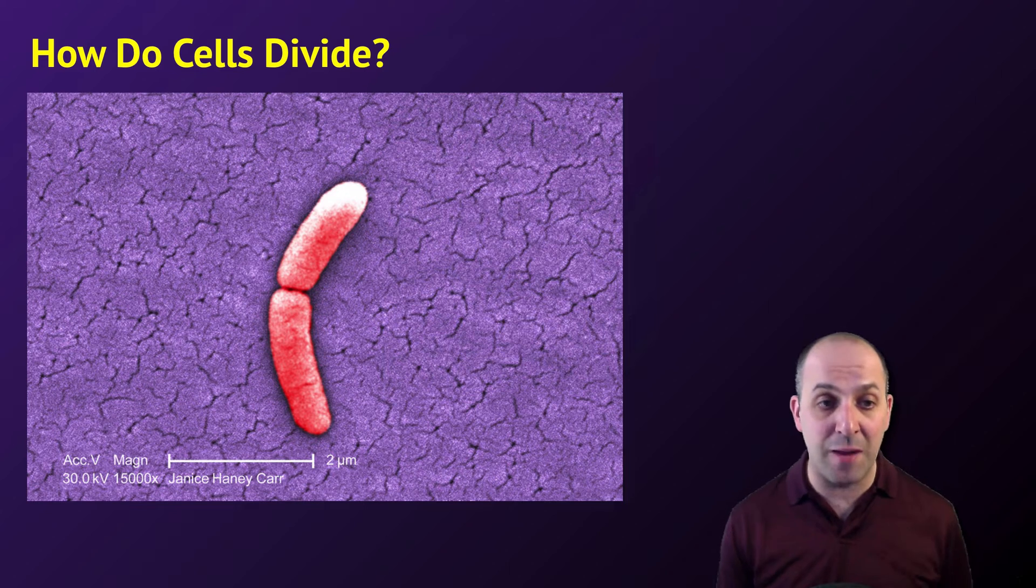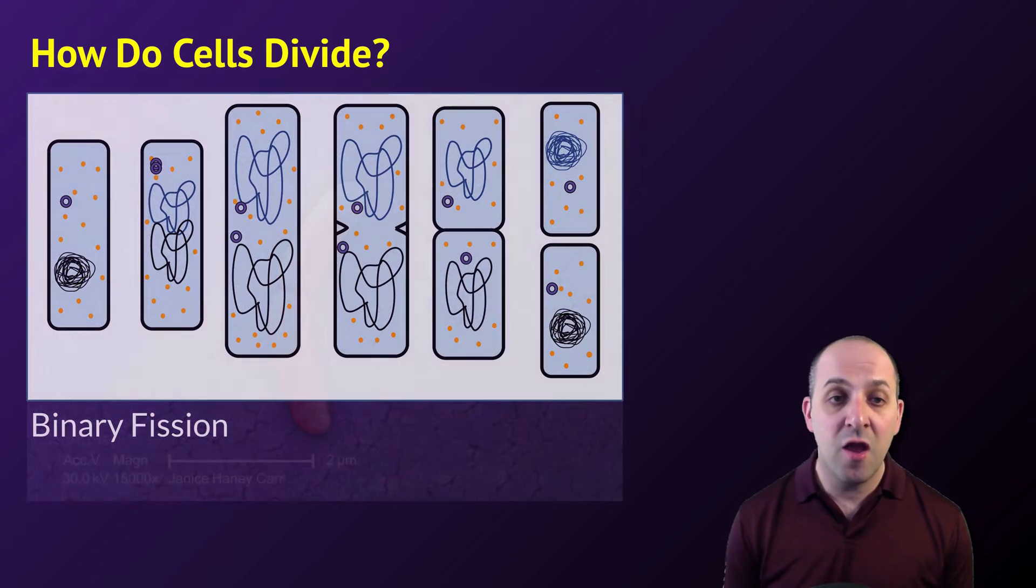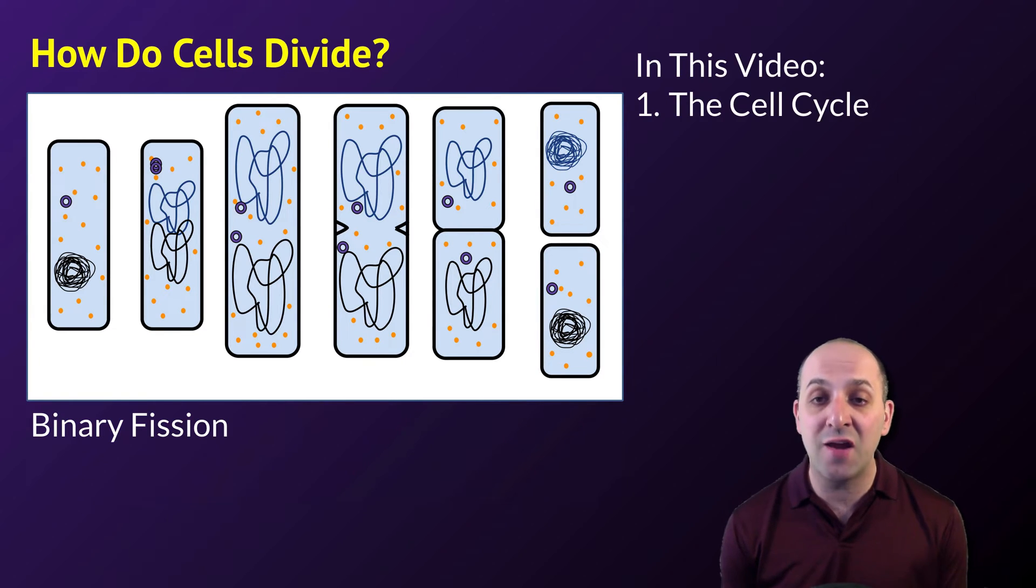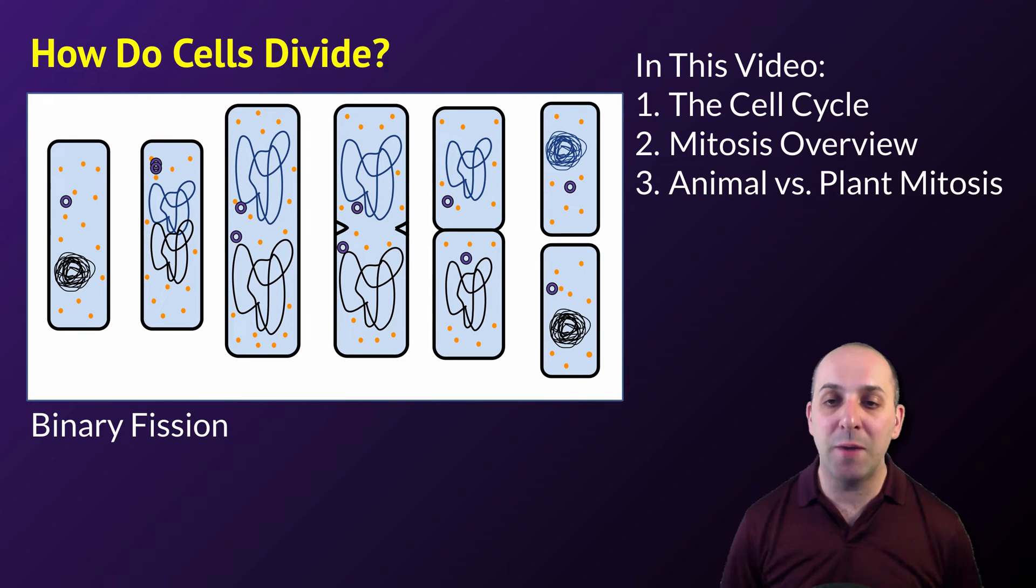Prokaryotic cells divide too. This bacterium is in the middle of the process. They divide through a process known as binary fission, but that's not really what we're going to focus on here. We're going to focus instead on the eukaryotic cell cycle, the process of mitosis, and comparisons between mitosis in animal-like and plant-like eukaryotic cells.